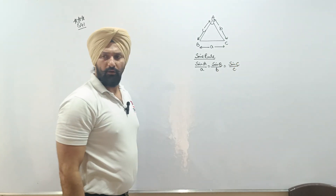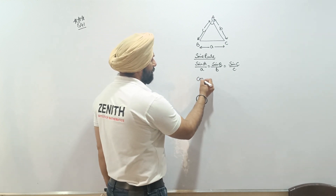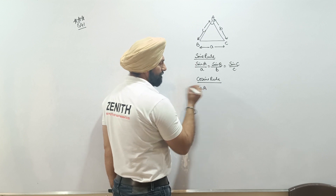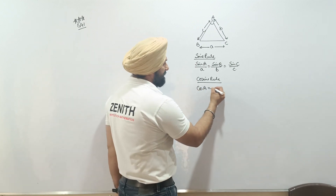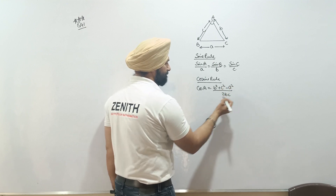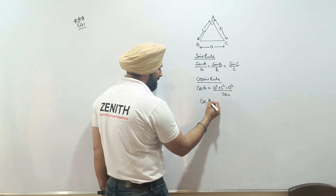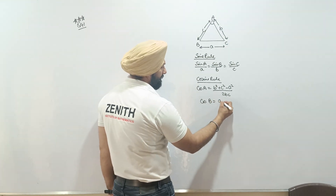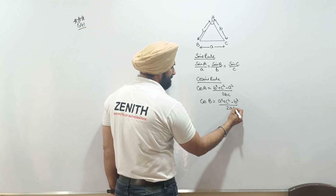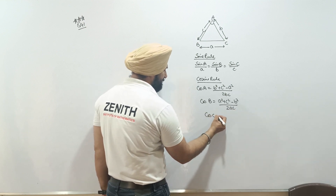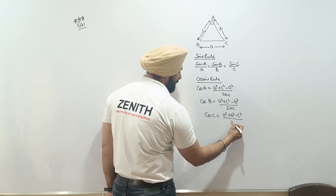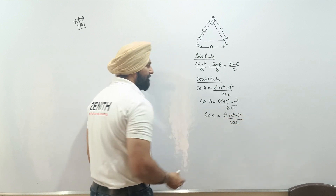The cosine rule states: cos A equals b squared plus c squared minus a squared over 2bc. Similarly, cos B equals a squared minus b squared... and cos C equals a squared plus b squared minus c squared over 2bc.